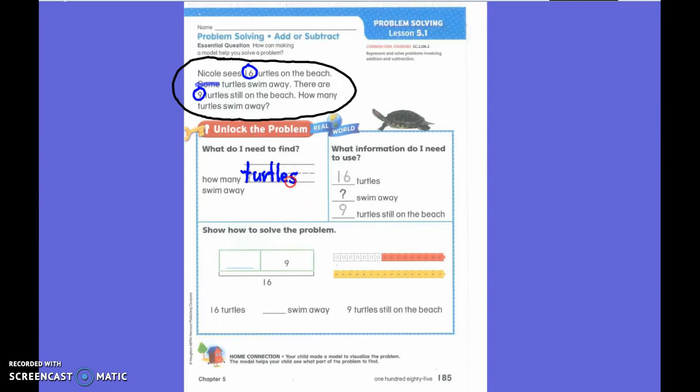What numbers did we decide were very important? Sixteen and nine. Very good. Sixteen and nine. But remember we don't know how many swim away and that's why we highlighted the word some because that is an important word.